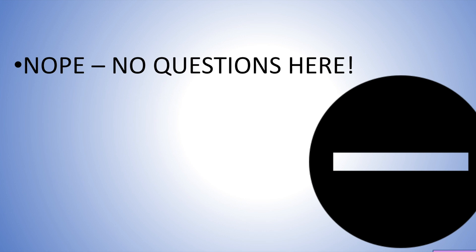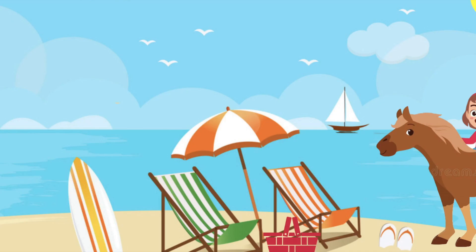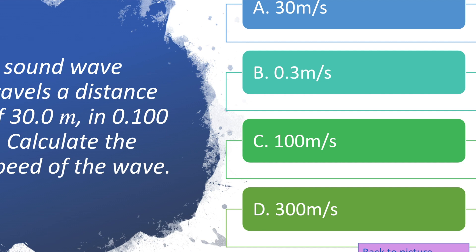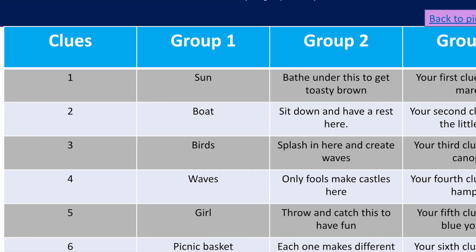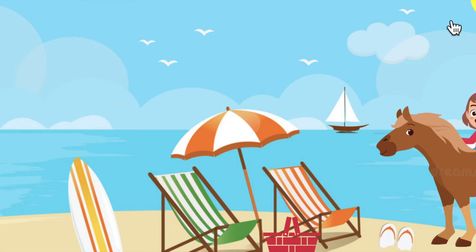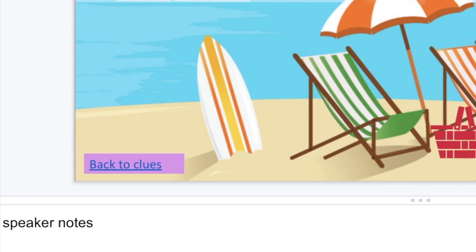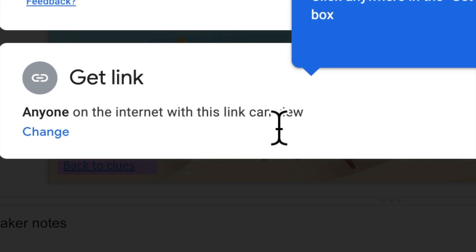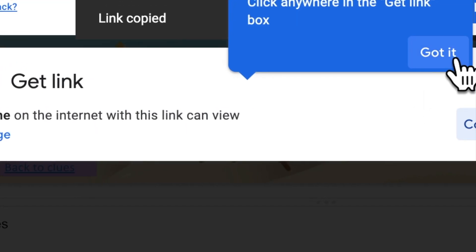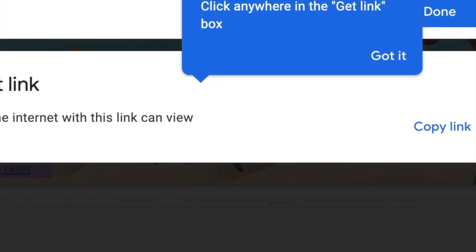Once you press Present, all the links work exactly the same as before. You can see the boat takes you to a question, clicking back returns to the picture, clicking the umbrella brings you back as well, and the clues link works too. Just double-check everything is working, then exit. When it is, press Share, copy the link, and share it with whoever you want — anyone with the link will be able to view it.